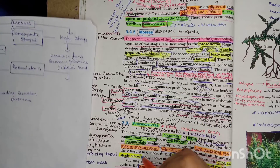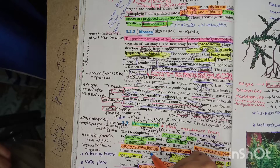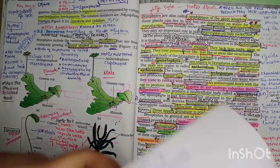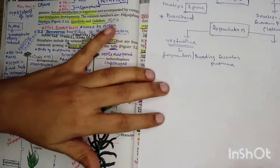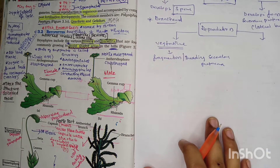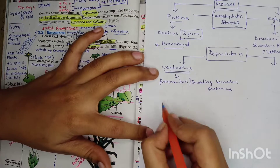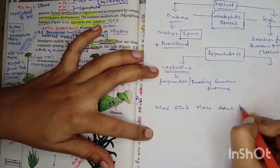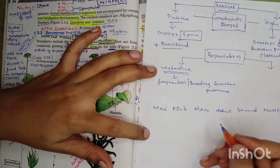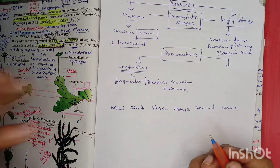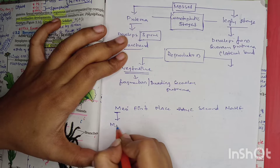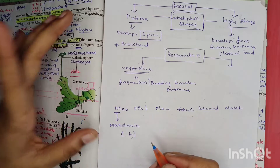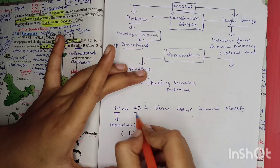Common examples of mosses are Funaria, Polytrichum, and Sphagnum. Sphagnum is used for peat and also has hydrocolloid properties. To memorize examples of bryophytes, there is a mnemonic trick. Marchantia comes under liverworts - it is the only example of liverworts to remember.